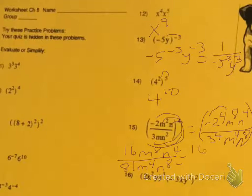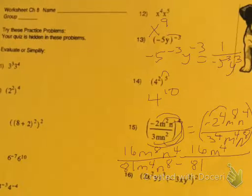16 and 81 are as reduced as they can go. So then we're going to look at the m's — you look at where the higher exponent is, and it's 8 and it's on top. So you're going to write m on top, then subtract the exponents: 8 minus 4 is 4. Then you're going to look at n — the higher exponent is on the bottom, so you write n on the bottom, and 8 minus 4 is 4. And that is your final answer.